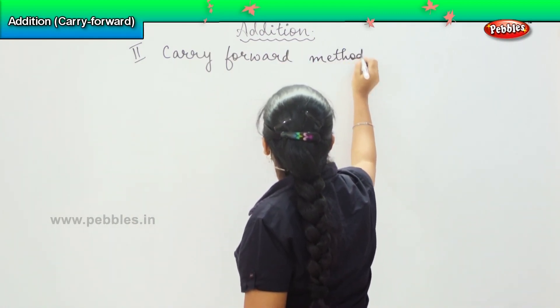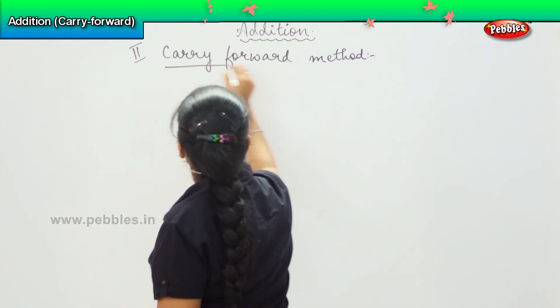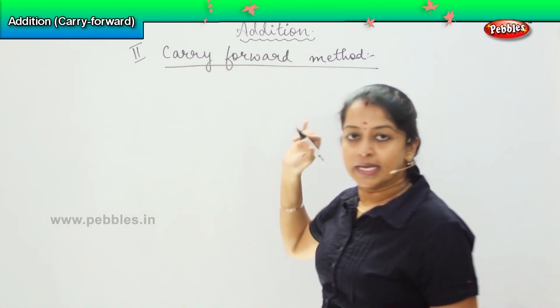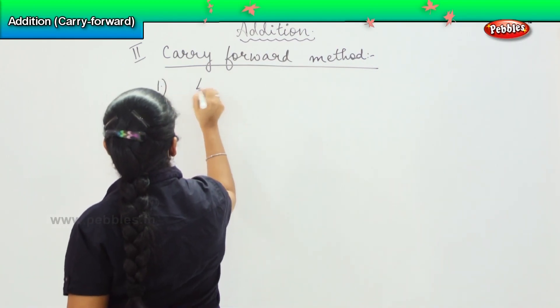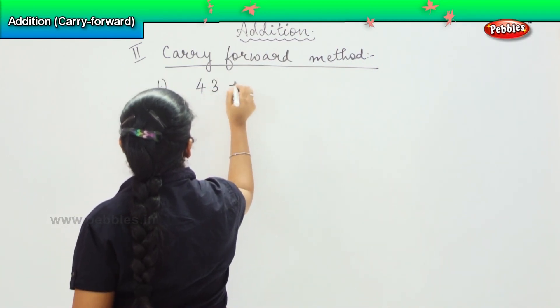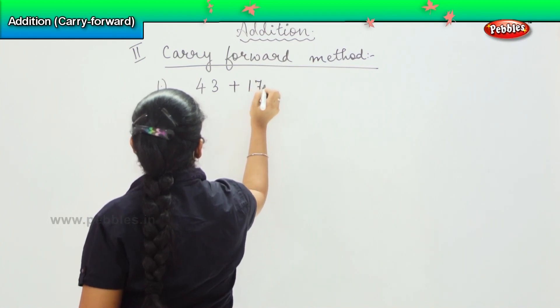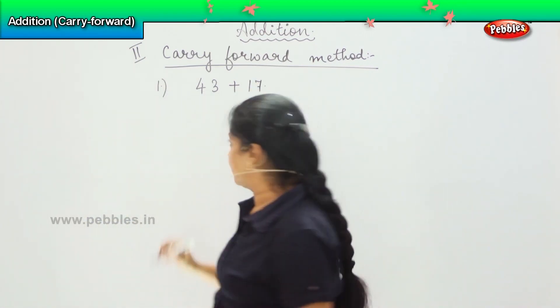So as the name suggests, carry forward means we have to carry the digit to the next place. Now the same question we will be doing: 43 plus 17. So now how we will do in this method?